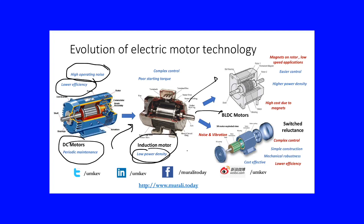Then we thought of two different technologies for solving these problems. For example, brushless DC motors, which have high power density and easier control. But there are some issues in the brushless DC motor: the magnets are in the rotor, which creates a constraint for operating at higher speeds because the magnets are surface-mounted on the rotor. There is also high cost because of the magnets.